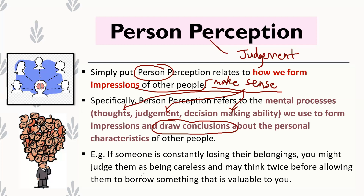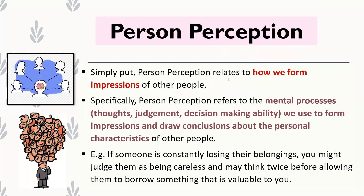For example, if someone is constantly losing their belongings, you might judge them as being careless, irresponsible, or reckless. And if they ask to borrow your pen or textbook, you might think twice before giving it to them based on their past record of behavior. That's what person perception is — how we perceive or make judgments of other people around us.